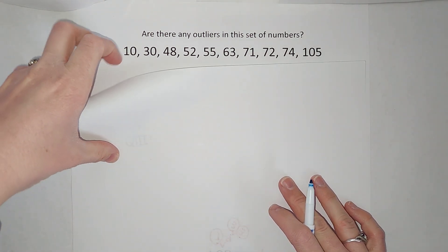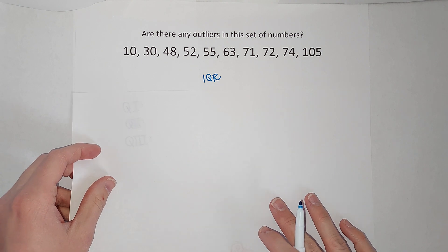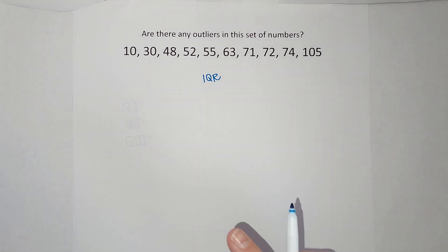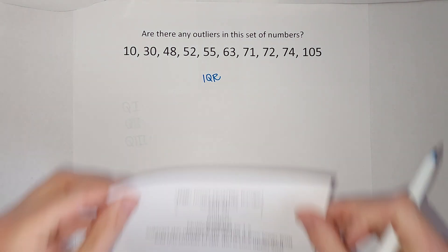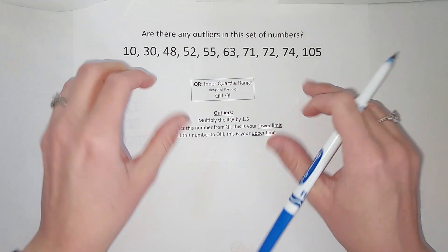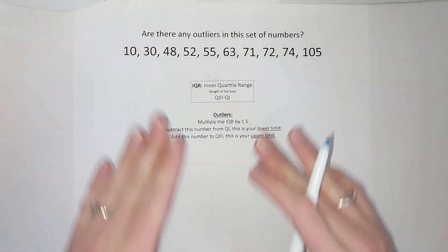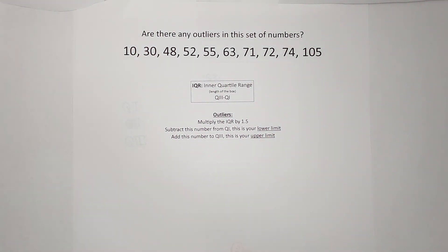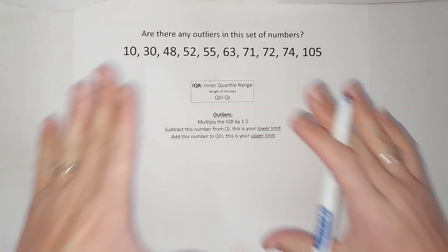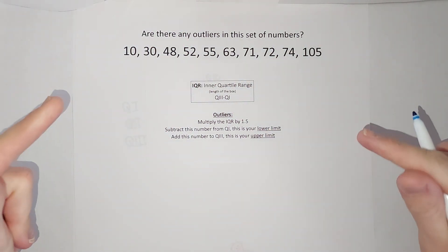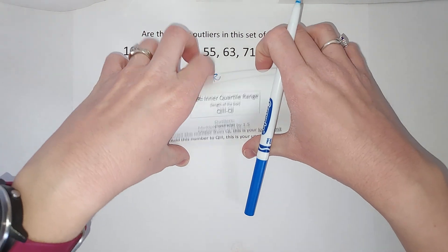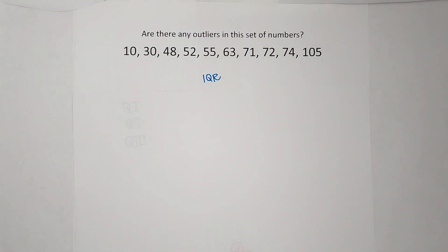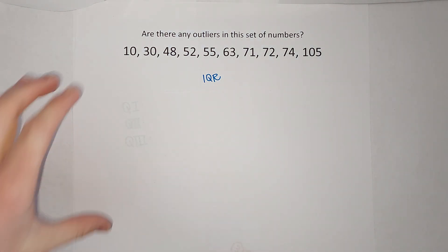We find outliers by first finding our IQR, which is our interquartile range. If you like to read it, here it is — feel free to take a screenshot if that helps. The IQR is found by subtracting the first quartile from the third quartile.